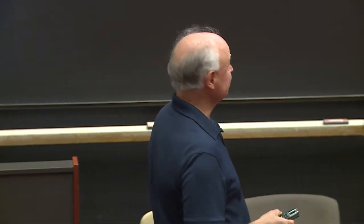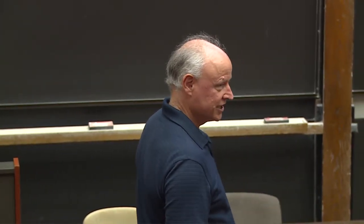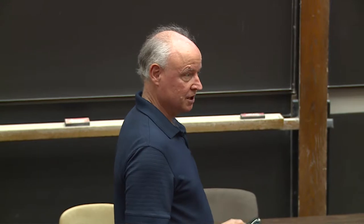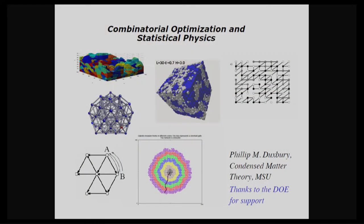These pictures indicate some solutions to physics problems that my group calculated over the 10 years prior to 2007. In each case, the algorithms we used were standard algorithms from computer science. This is an example of bacterial growth. There's interest in looking at the shape of growths to distinguish between a cancer and non-cancerous skin lesion. It turns out that cancerous skin lesions have a fractal kind of surface, whereas non-cancerous ones have a more self-affine surface.